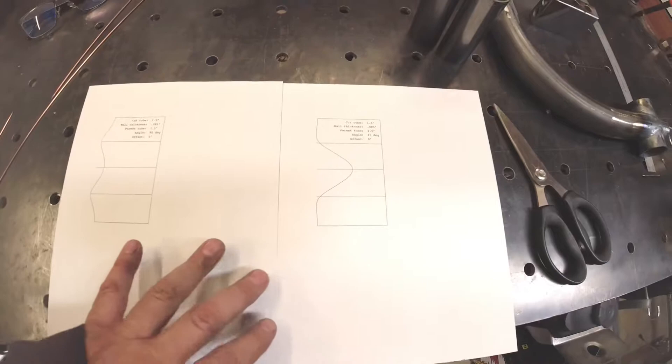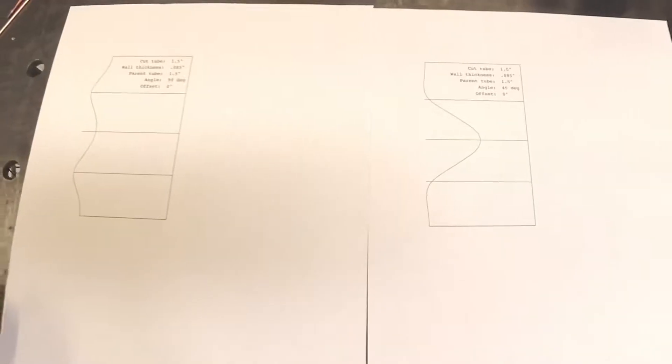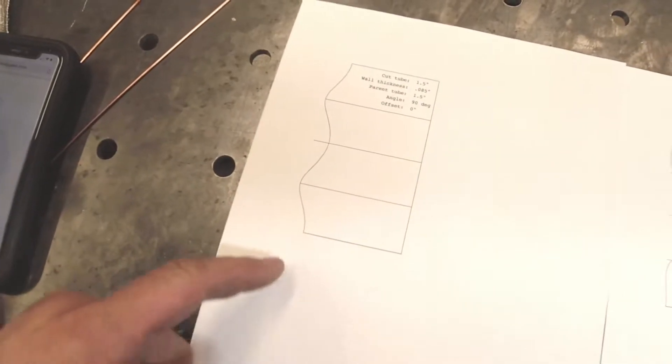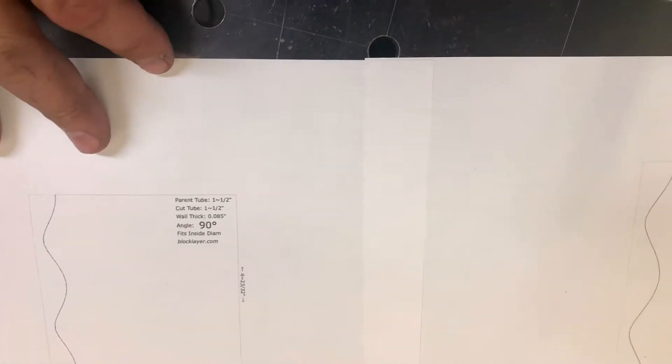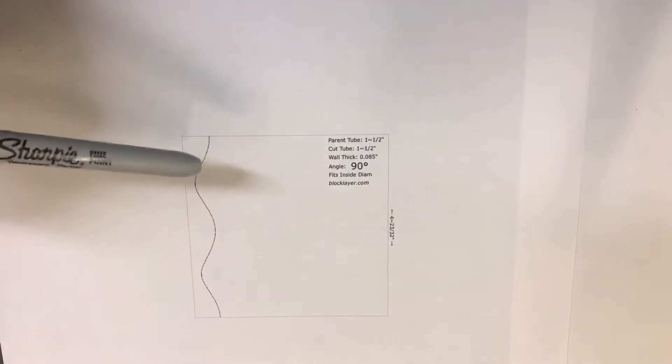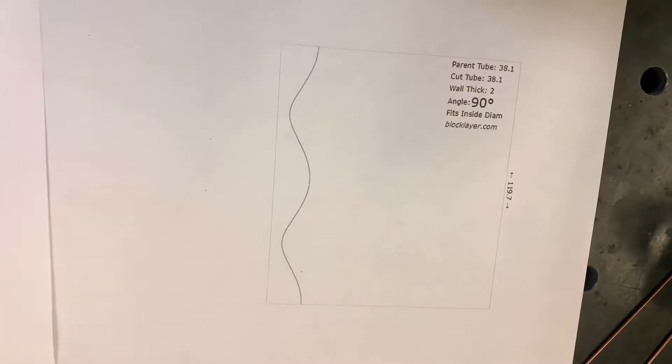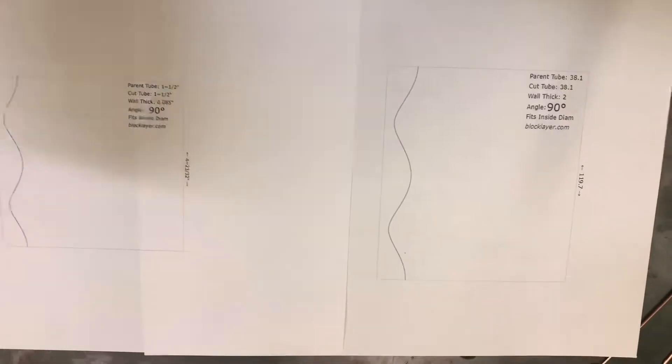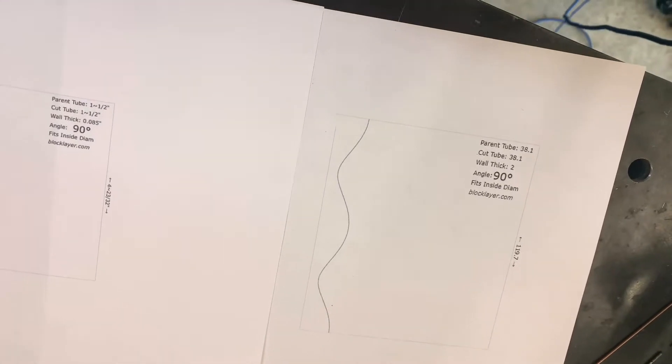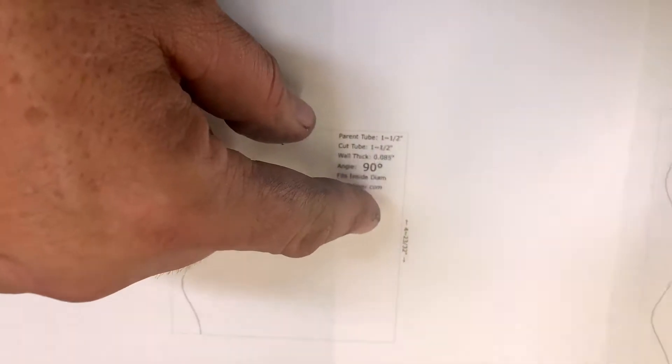Another option is there's some websites out there where you can tell it what diameter tube you have, what angle you have, and it'll print you out paper templates that you just cut out. One thing to keep an eye on when you're printing these templates - make sure your printer is set to 100% scale. If it's scale to fit, you can see the difference. You can always double check the circumference of your tube and measure it that way as well.